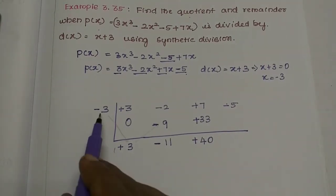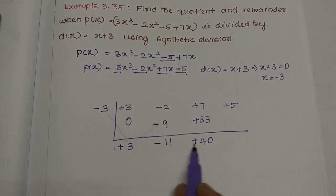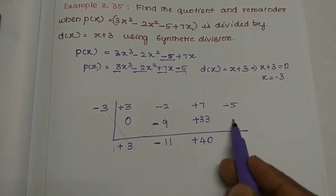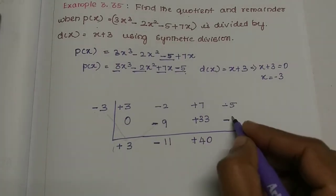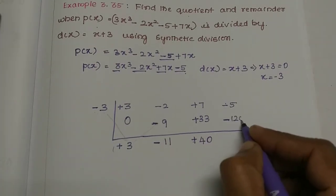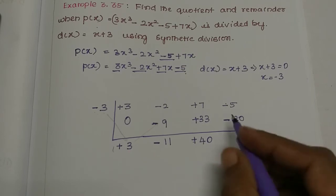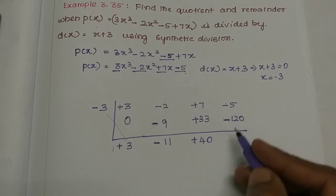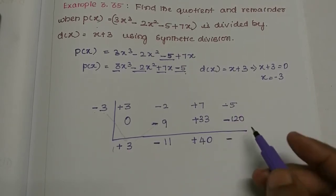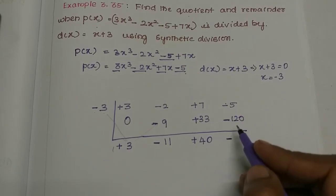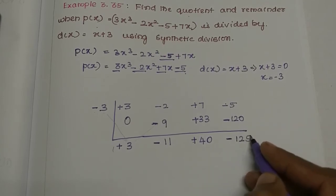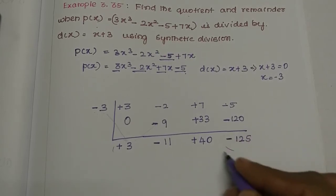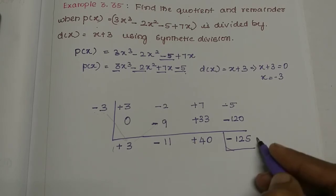Next step: multiply -3 and +40. Minus times plus is minus, so 3 × 40 = 120, giving -120. Now the two symbols are both minus. Same symbols add: 120 + 5 = 125, so the result is -125. This last value, -125, is the remainder.